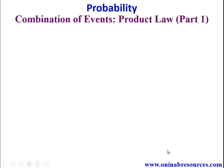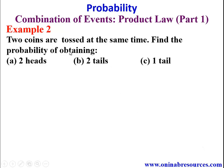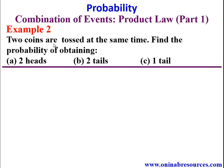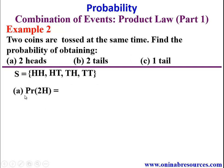Example 2: Two coins are tossed at the same time. Find the probability of obtaining (a) two heads, (b) two tails, (c) one tail. With two coins we have four outcomes in the sample space: HH, HT, TH, TT. For part (a), there is only one outcome with two heads, so P(two heads) = 1/4.